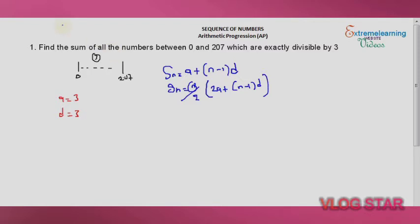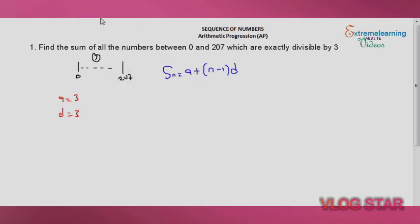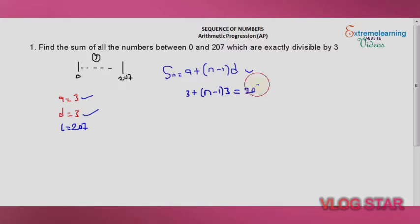Since we don't know the number of terms from the question, we first need to find 'n'. We use the first formula and substitute: a = 3, d = 3, and the last term is 207. So we write: 3 + (n − 1) × 3 = 207.